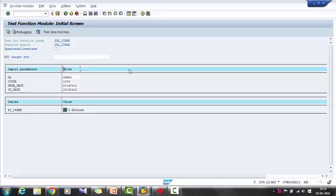If you see here, for this RFC, we have four input parameters. First one is GL account, the next one is company code, and from date to date. I am giving the same input as the standard SAP report: GL account 99900, company code 1000, and dates between 1-1-2014 to 18-4-2016.